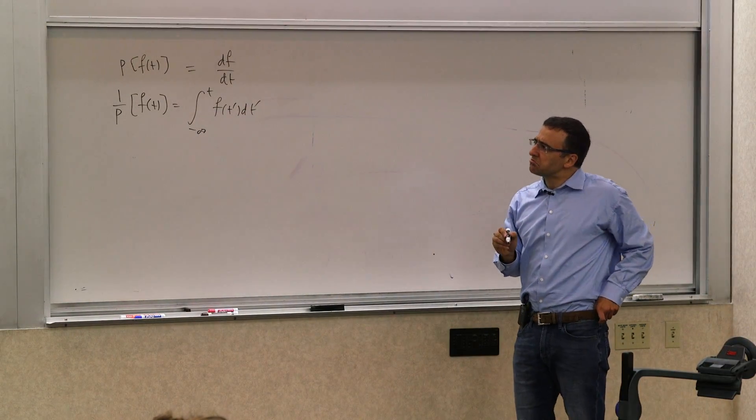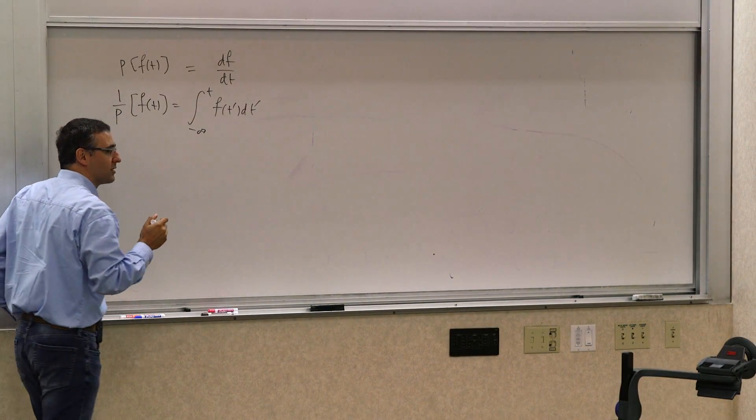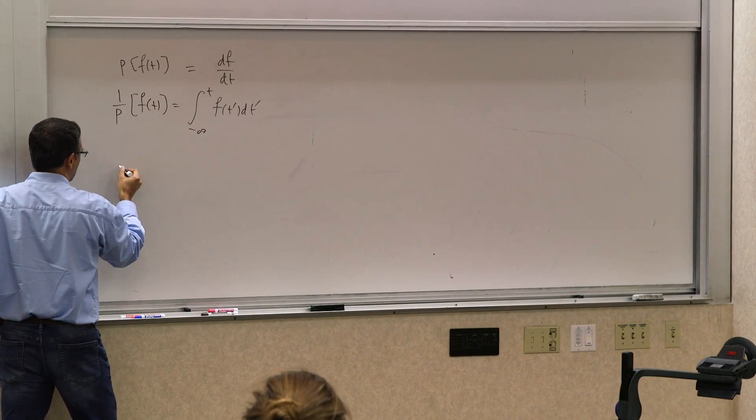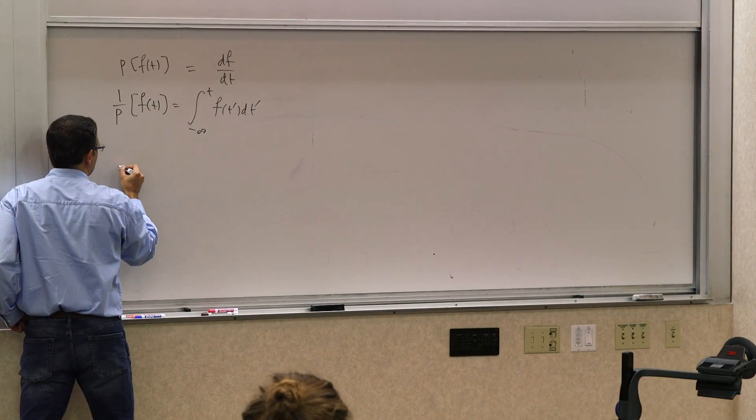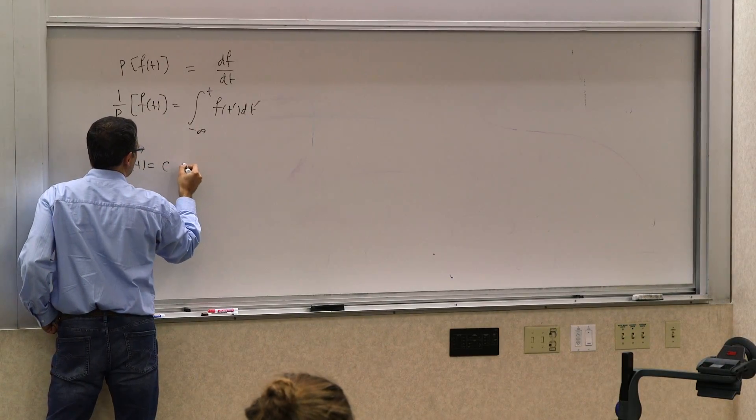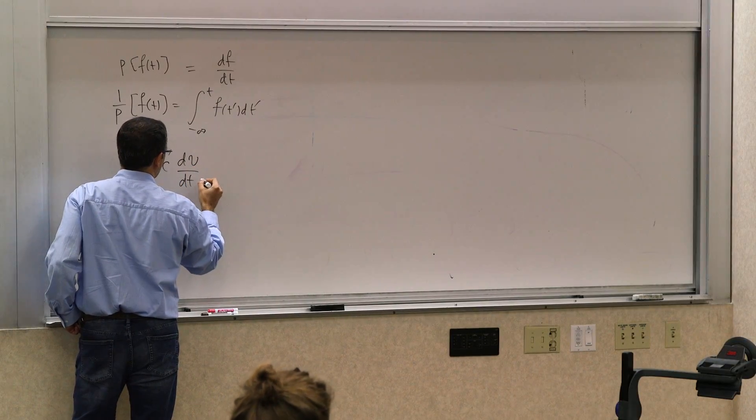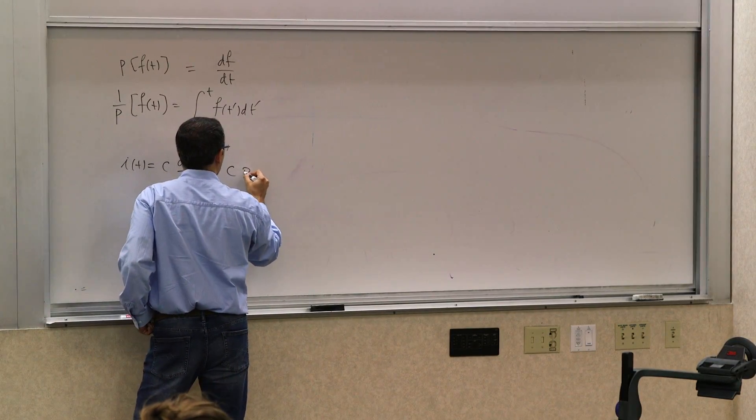So we saw that you can actually use this for defining capacitors and inductors. For example, if you have a capacitor, we saw that in an LTI capacitor the current i(t) is c dv/dt. So which we could write as c p of v.